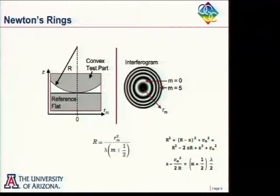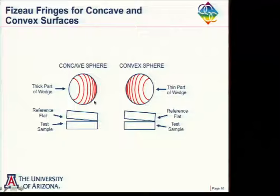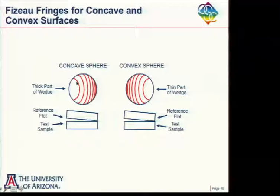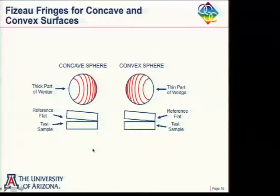If we have no tilt, Newton's rings are circular. If we introduce a little tilt, the fringes become curved instead of circular. If we have a concave surface, with the reference on top and the test on bottom, the surface is higher at the edge. So the fringes are going to curve towards the thick portion of the wedge. By knowing the direction of the wedge, you can tell whether the surface is concave or convex.